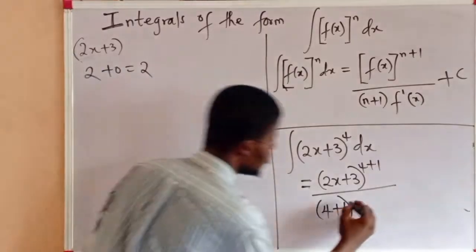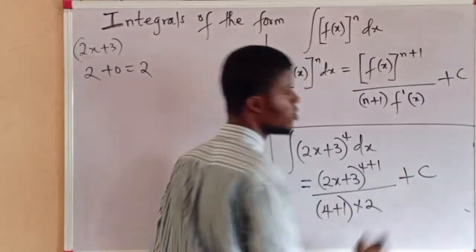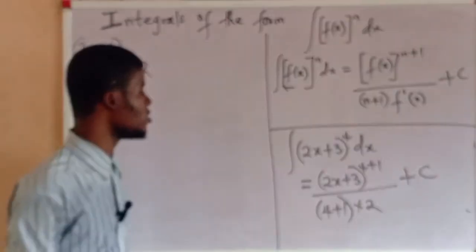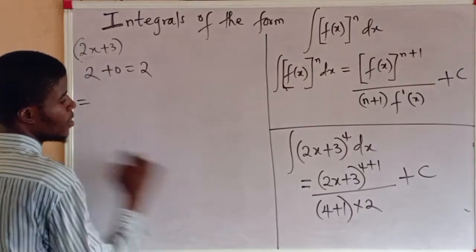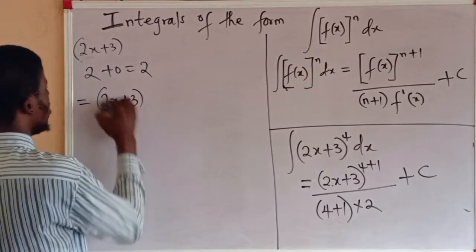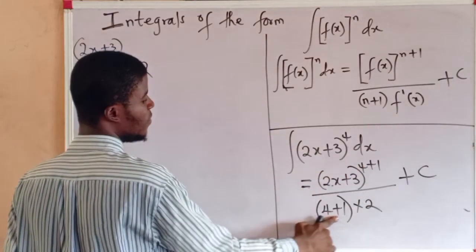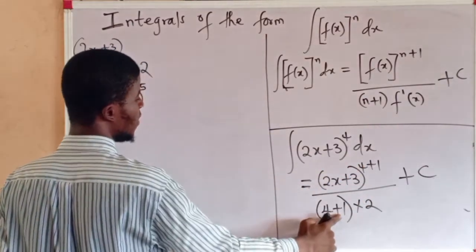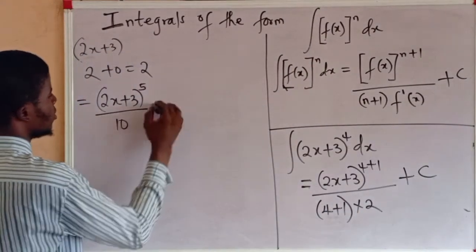That's 2, so times 2. Then we have to add the arbitrary constant to it. That means the final solution would be this: we have 2x plus 3 all to the power of 5. 4 plus 1 is 5. And here we have 5 also. 4 plus 1 is 5. 5 times 2 is 10, all over 10, plus C.